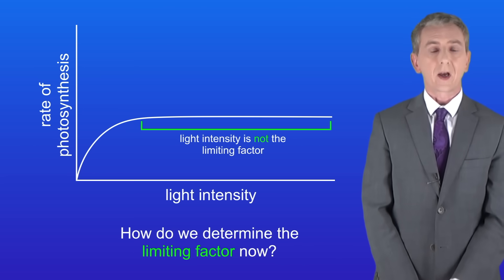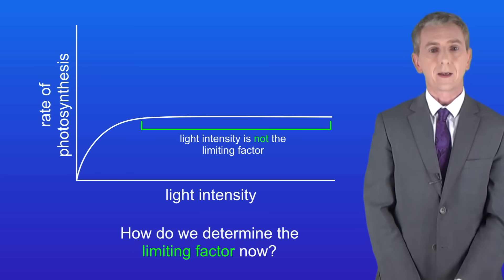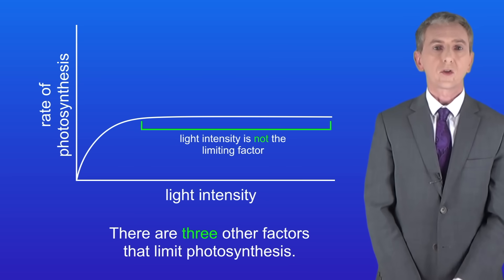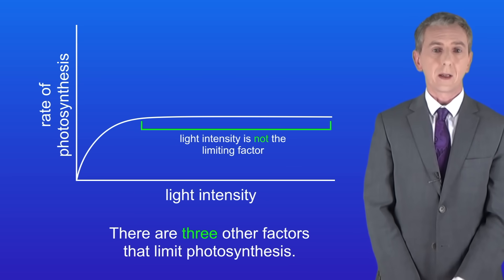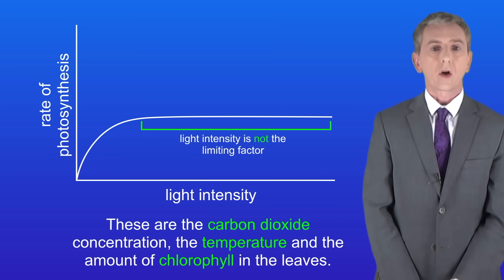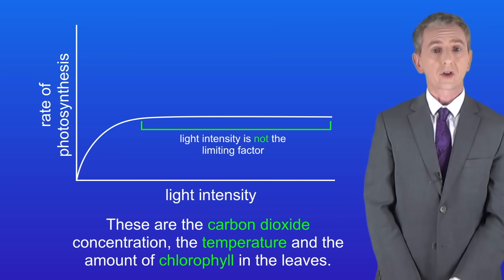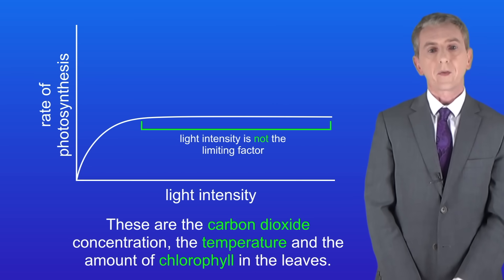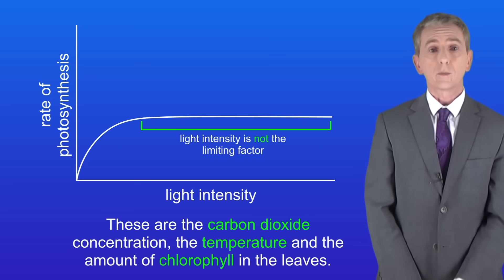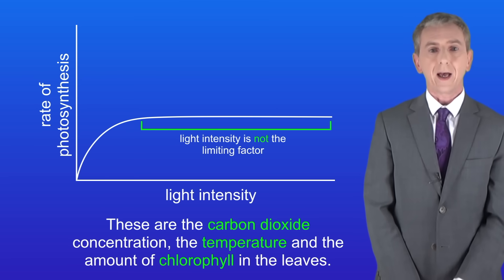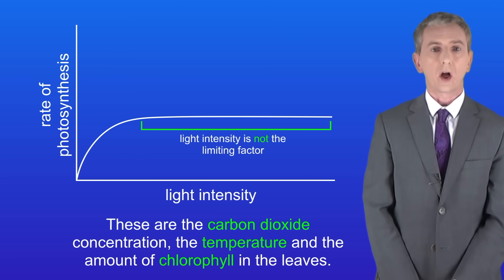So the question is: how would we determine the limiting factor now? As we saw in the last video, there are three other factors that limit photosynthesis: the carbon dioxide concentration, the temperature, and the amount of chlorophyll in the leaves. We can't do much to change the amount of chlorophyll, but we can change the temperature and the concentration of carbon dioxide.